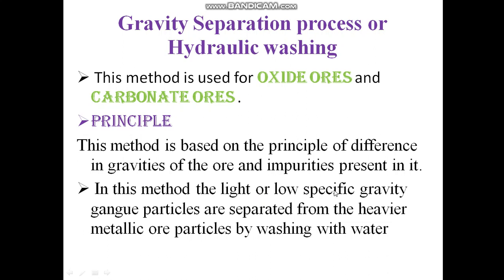In this method, the light or low specific gravity gangue particles — gangue meaning the impurity which is present — are separated from the heavier metallic ore particles by washing with water. When we pass the water, the lighter and the heavier ore particles get separated.